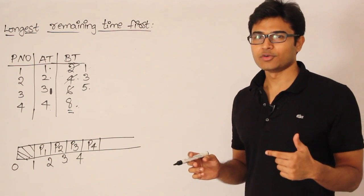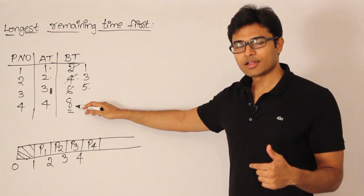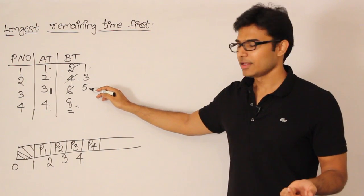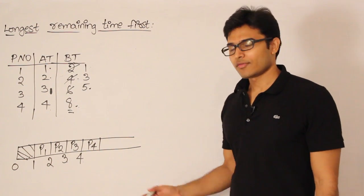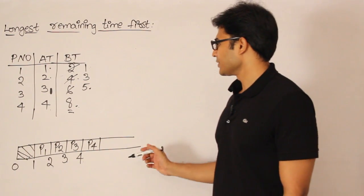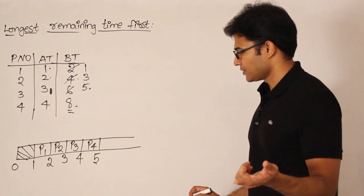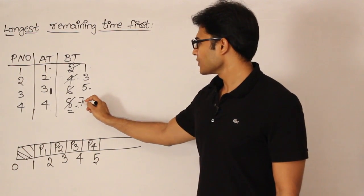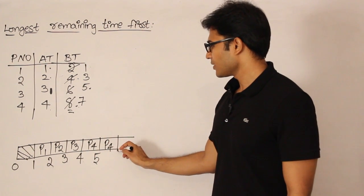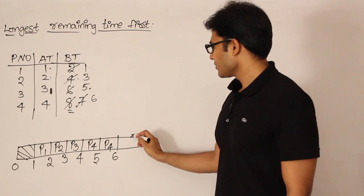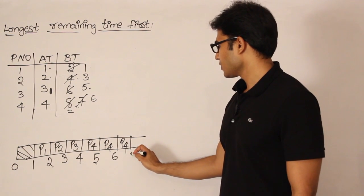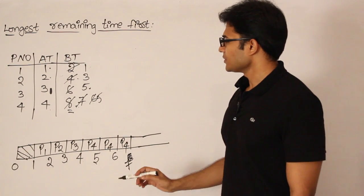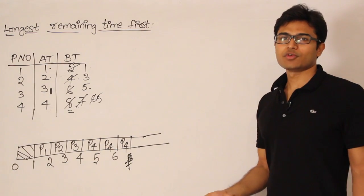What you should do is run a process until some other process becomes the longest. In an exam, figure out how long to run the current process so that another becomes the longest. For simplicity here, I'll run one unit at a time. Running P4 for one unit makes its remaining burst time 7; P4 is still the longest so we pick P4 again. Running another unit gives 6, still longest, so again P4. Running one more unit brings it to 5.